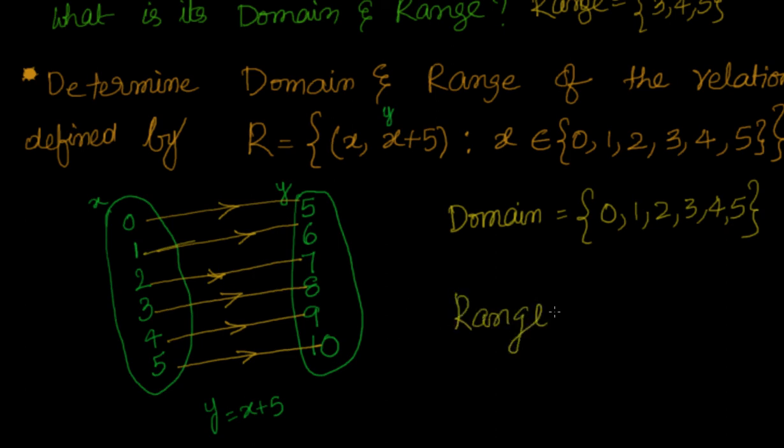Range is nothing but equal to the elements from the second set which are part of the relation, that is nothing but {5, 6, 7, 8, 9, 10}.